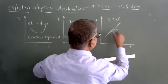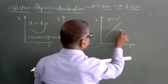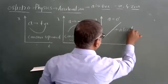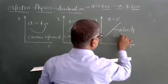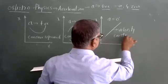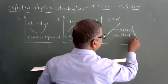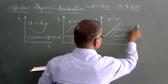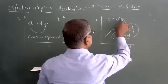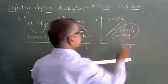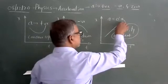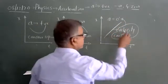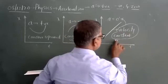Here, velocity — this is an X-t graph — velocity is constant. When you have velocity constant, acceleration is zero. This is an easy graph, because velocity means slope, and slope is constant.